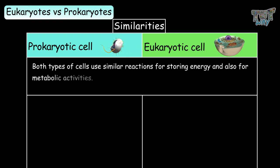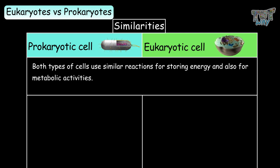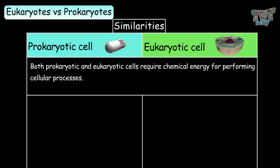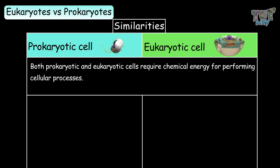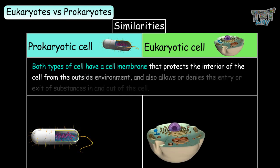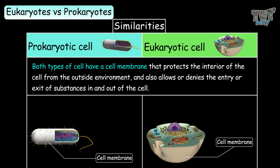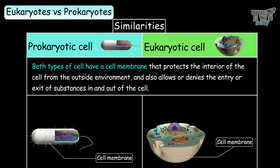Both types of cells use similar reactions for storing energy and for metabolic activities. Both prokaryotic and eukaryotic cells require chemical energy for performing cellular processes. Both types of cells have a cell membrane that protects the interior from the outside environment and controls the entry or exit of substances in and out of the cell.